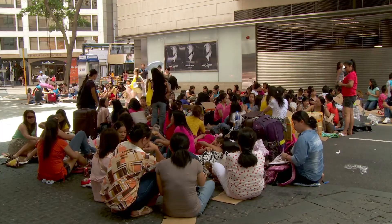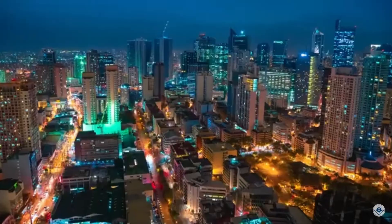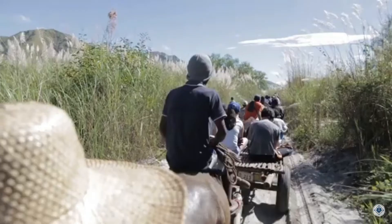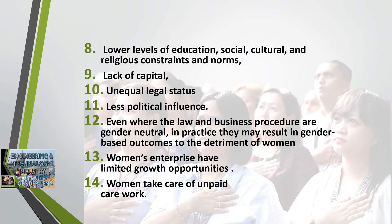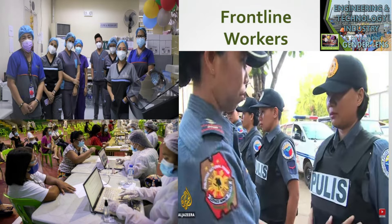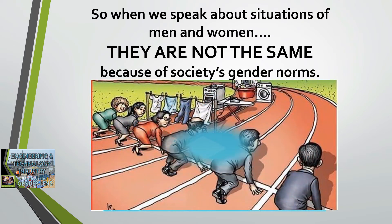Mismatches with labor market demand occur because some industries prefer one gender over another. Gendered outcomes of institutional and market failures include inadequate delivery of support services to women, such as child care and capital support. Domestic responsibilities worsen women's multiple burdens and act as barriers to equal participation in the labor force. The general lack of capital, especially for women in poorer areas, unequal legal status, bias in laws and policies, and less political influence all further disadvantage women. Society makes it easier for men to advance in their careers, while presenting many hurdles for women.